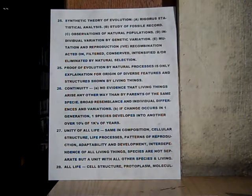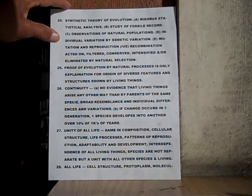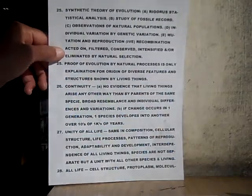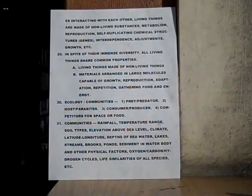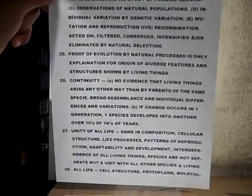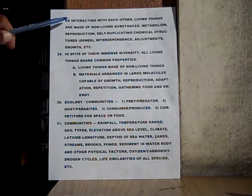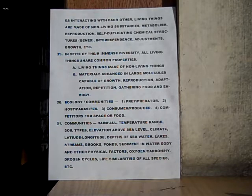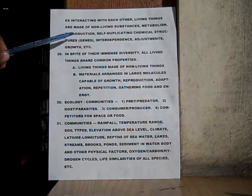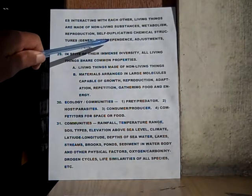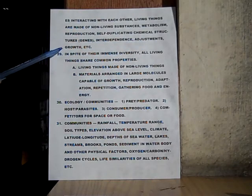We'll go to number twenty-eight at the bottom there. All life includes cell structure, protoplasm, molecules interacting with each other. Living things are made of non-living substances. All living things have metabolisms, reproduction, self-duplicating chemical structures or genes — that is interdependence, adjustments, growth, etc.